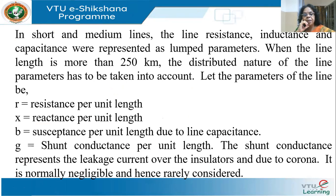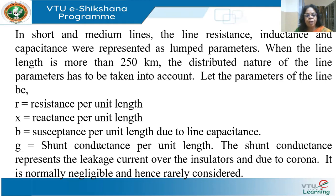In short and medium lines, the line resistance, inductance, and capacitance were represented as lumped parameters. When the line is more than 250 kilometers, the distributed nature of the line parameters has to be taken into account. The parameters of the line are: r — resistance per unit length, x — reactance per unit length, b — susceptance per unit length, and g — shunt conductance per unit length.